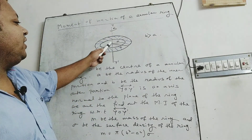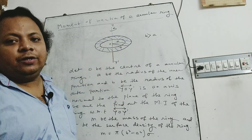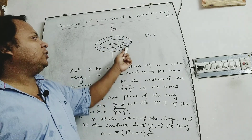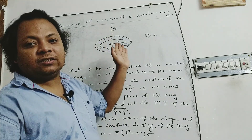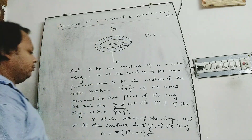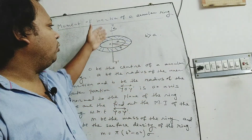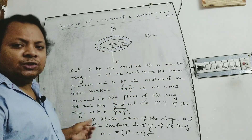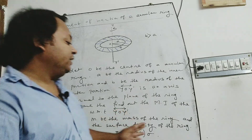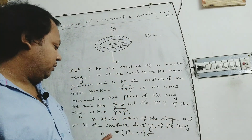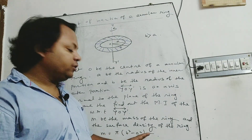Let O be the center of the annular ring. Let small a be the radius of the inner portion of the ring and small b be the radius of the outer portion. Let yOy prime be the axis which is normal to the plane of the ring. We have to find the moment of inertia of the ring with respect to yOy prime axis. Let small m be the mass of the ring and sigma be the surface density, that is mass per unit area, so m equals pi into b squared minus a squared into sigma.